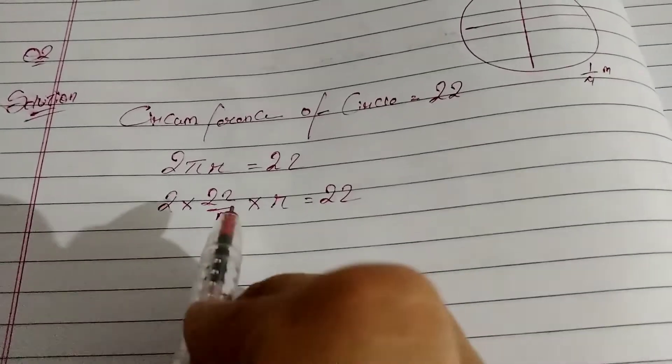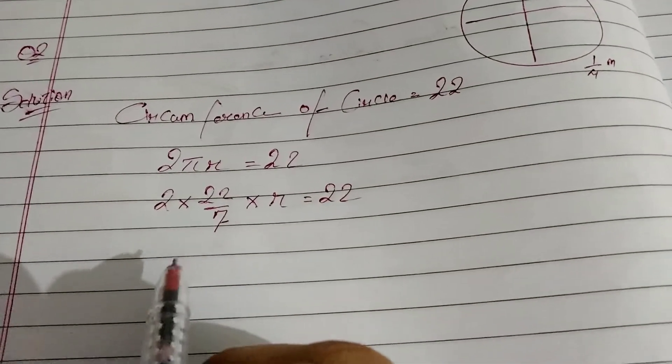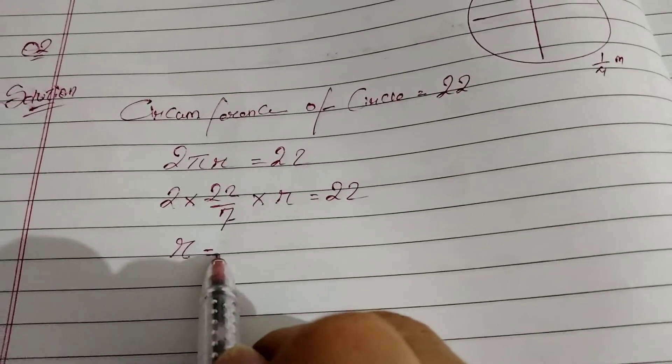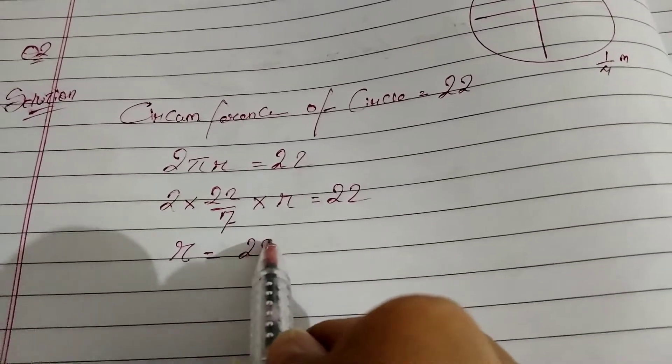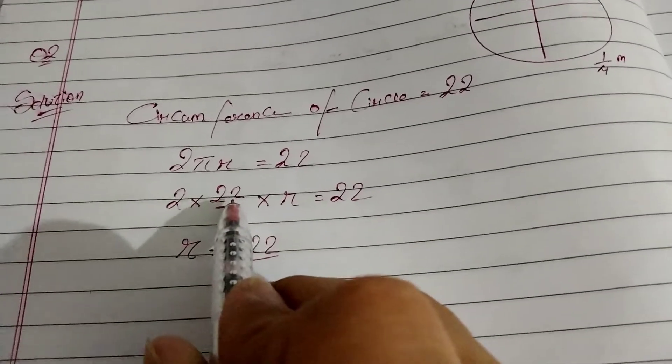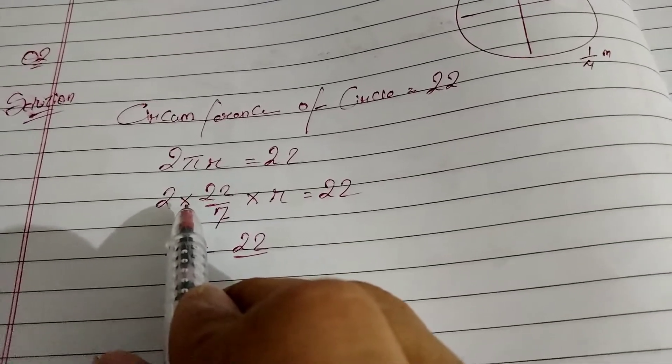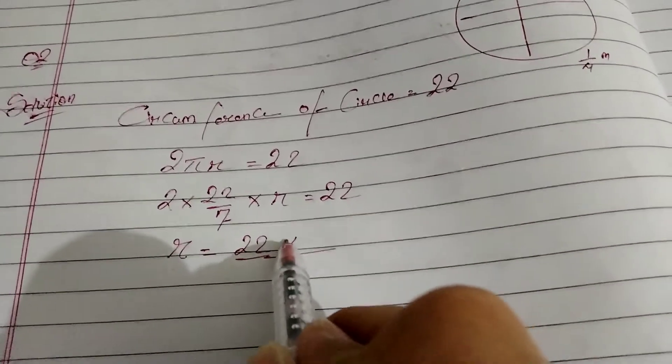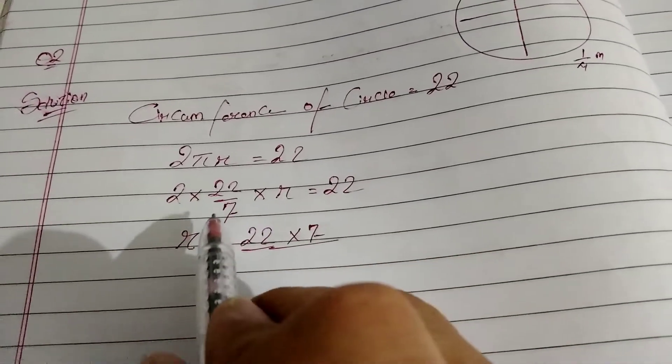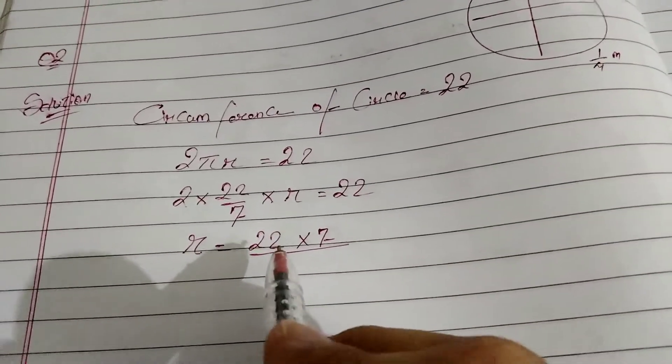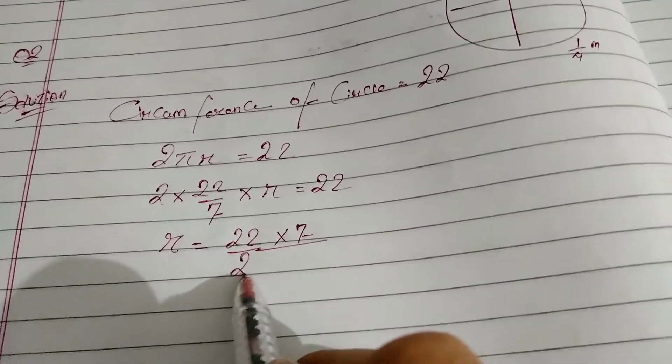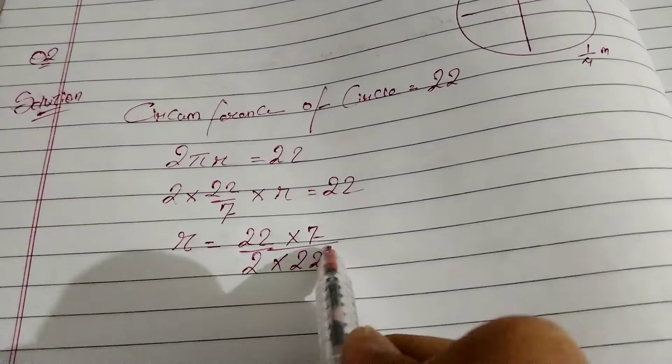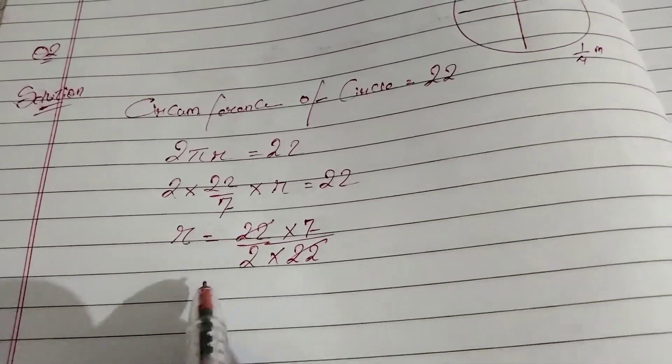So now let's see what we can do. Bring the r here since we are going to find radius. r equals 22, and then what we have next? 7, 22 into 7. I'll just bring this here and then we have 2 into 22. 2 into 22 is cancel, so r is equal to 7 by 2.